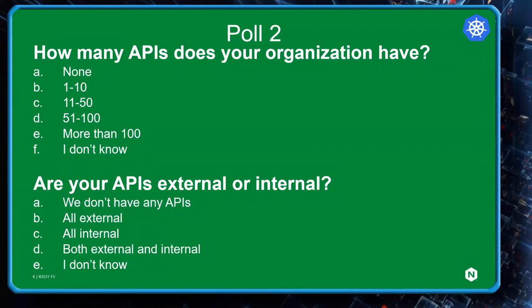For question number one — how many APIs does your organization have — we see a nice bell curve: 25% between 11 and 50, next highest being 1 to 10 at 22%, and more than 100 also at 22%. As for whether APIs are external or internal, 65% said both. This shows that APIs have matured into the mainstream. If we had asked the same question two, three, maybe four years ago, we would see a very different reality.